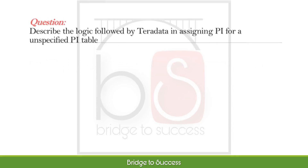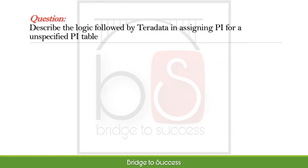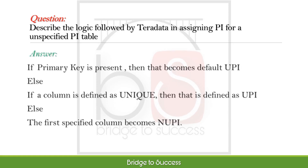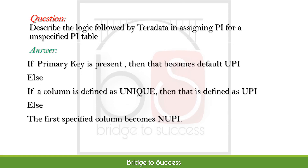Describe the logic followed by Teradata in assigning PI for an unspecified PI table. If a primary key is present, then that becomes the default UPI. Else, if a column is defined as unique, then that is defined as UPI. Else, the first specified column becomes the non-unique PI.